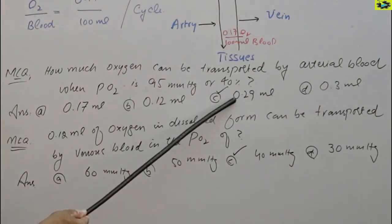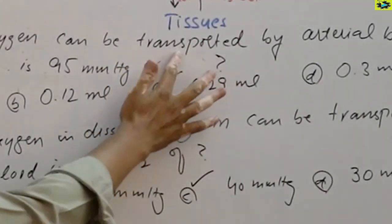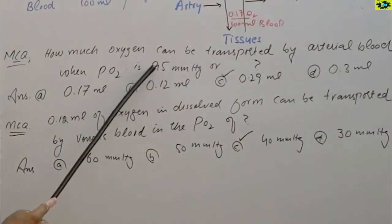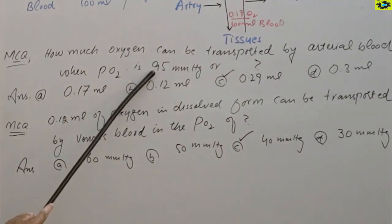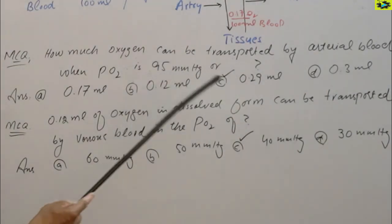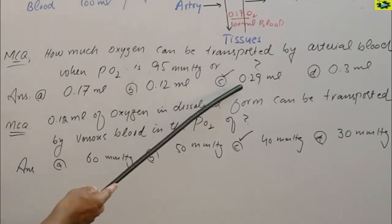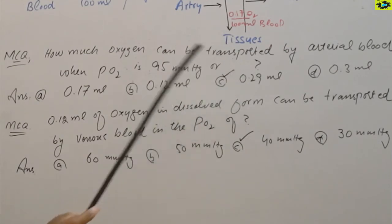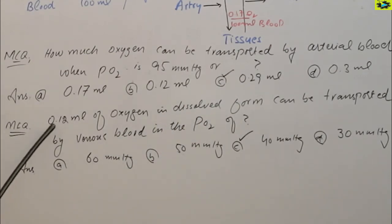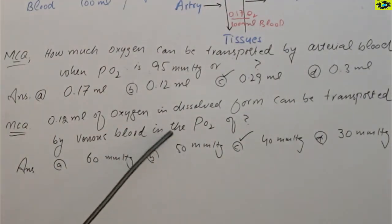If it is 95 mm of mercury, it is about 0.29 ml, it is the correct answer. Now second issue is 0.12 ml of oxygen in dissolved form can be transported by venous blood at the partial pressure of how much?